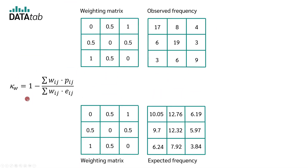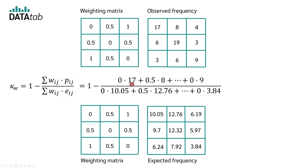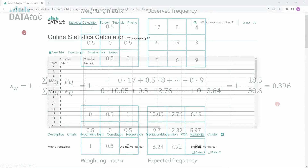With the weighting matrix, the observed frequencies, and the expected frequencies, we can now calculate the weighted kappa. We multiply each cell of the weighting matrix by the respective cell of the observed frequency and sum everything up — for example, 0 times 17 plus 0.5 times 8, continuing until 0 times 9. We do the same with the weighting matrix and the expected frequencies: 0 times 10.05 plus 0.5 times 12.76, continuing until 0 times 3.84. Doing all the calculations gives us a weighted kappa of 0.396.